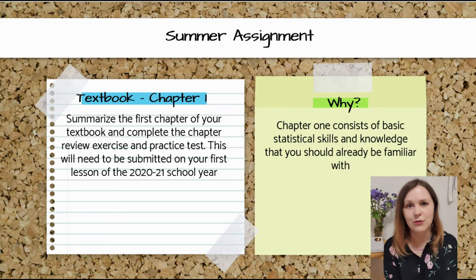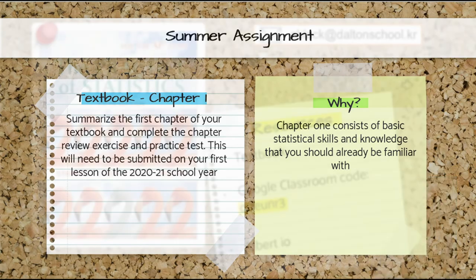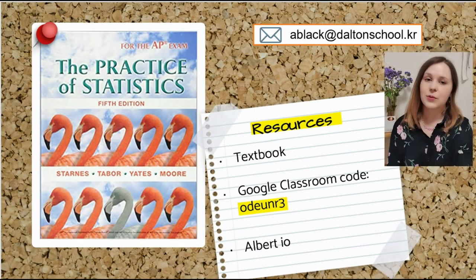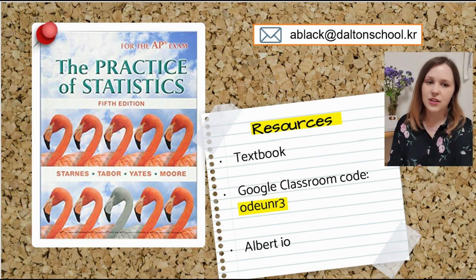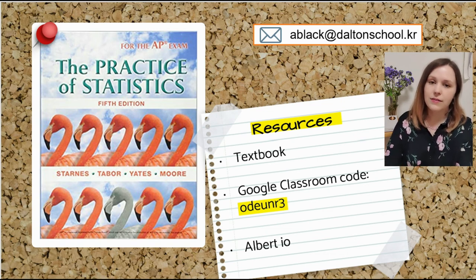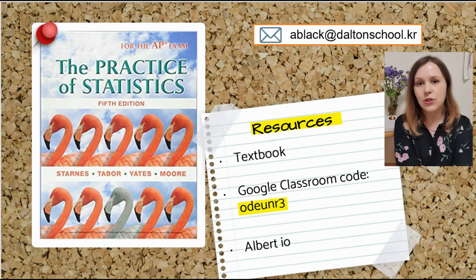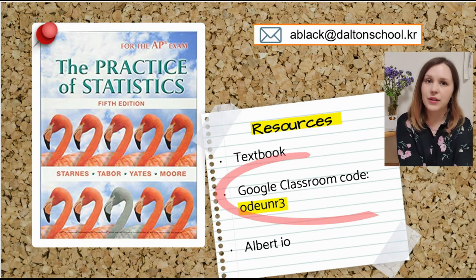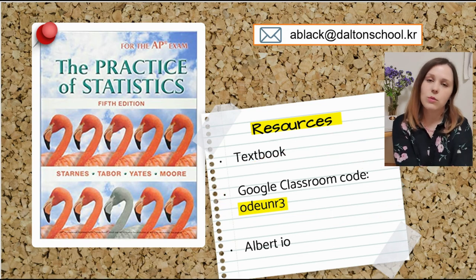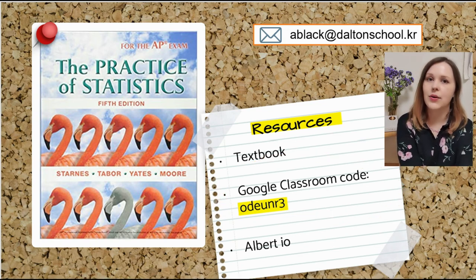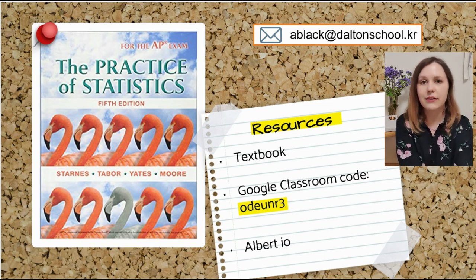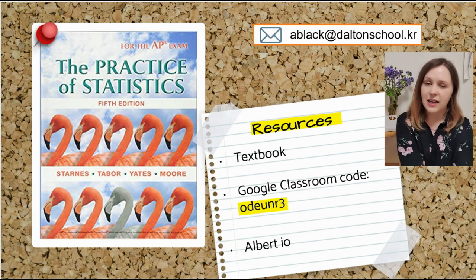Just some quick reminders about resources. As you can see on the screen, our textbook, The Practice of Statistics — you need to get a copy of this, particularly so you can complete your summer assignment. You also need to make sure you sign up to the Google Classroom; the code can be seen on the screen. Once you sign up to the Google Classroom, you will be signed up to our Albit.io class, but there is nothing on there right now so you don't need to go into that. If you have any questions or need any help, my email address is on the screen as well.